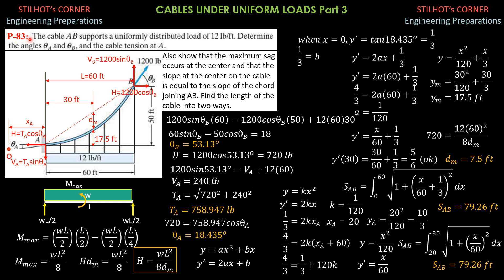The original problem: cable AB supports a uniformly distributed load of 12 pounds per foot. Determine the angles theta A, theta B, and the cable tension at A. Those are the original questions, but I extended the problem in this manner.